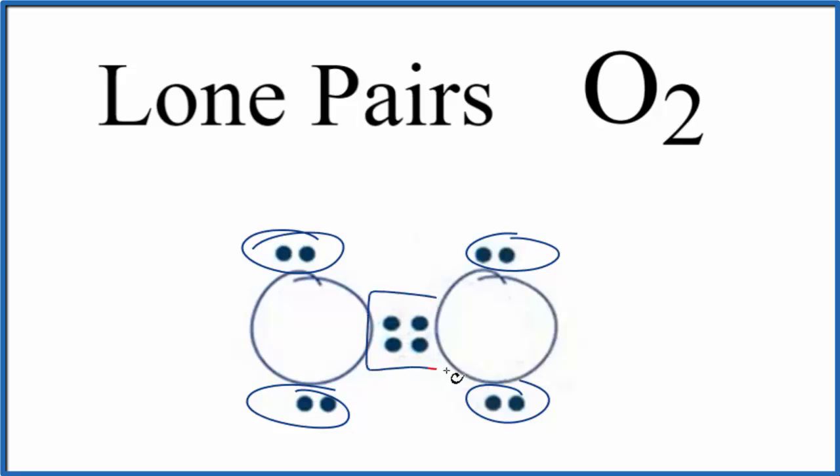The electrons between atoms, here we have a double bond, so we have two pairs of electrons shared between the oxygen atoms. These are called bonding electrons, or bonding pairs of electrons.